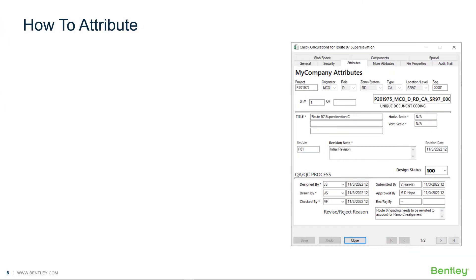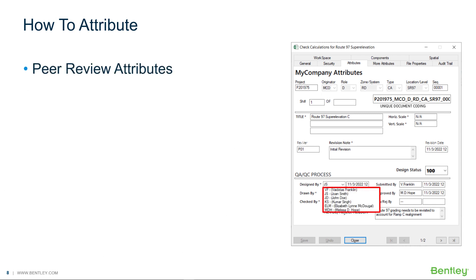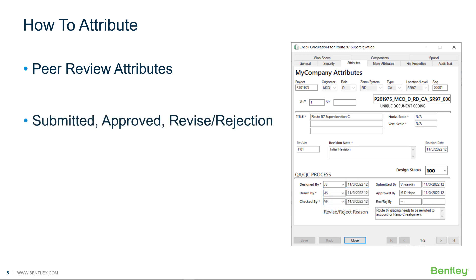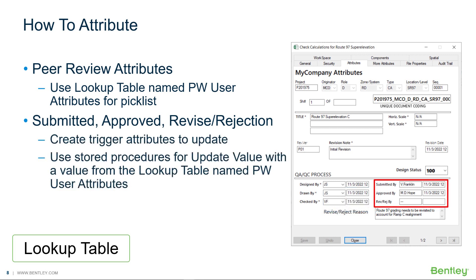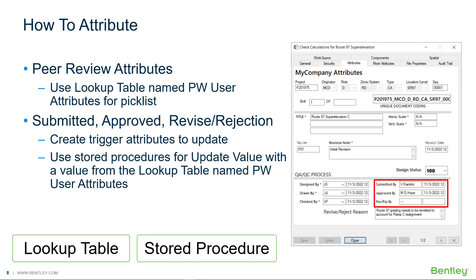So how do we create these smart attributes? Our example shows pick lists for the peer review attributes. The submitted, approved, and revised reject attributes seem to update automatically. For the peer review attributes we will populate the drop down with values in a lookup table named pw user attributes. To update the submitted, approved, and rejection attributes, we will create update values using a stored procedure that returns appropriate values such as a date or from the lookup table named pw user attributes.